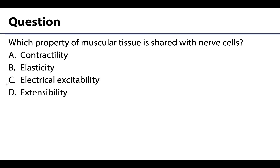Let's finish this video by reviewing a concept through assessment. Which property of muscular tissue is shared with nerve cells? A. Contractility, B. Elasticity, C. Electrical excitability, or D. Extensibility? Pause the video to think through this and review your notes if needed. The correct answer is C, electrical excitability. Contractility, elasticity, and extensibility are very much properties of muscle tissue, but they are not properties of nerve cells.